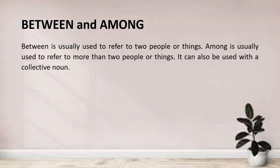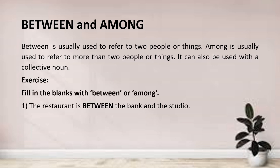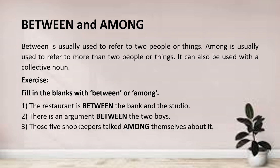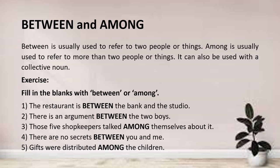Now I'll tell you about the usage of prepositions between and among. Between is usually used to refer to two people or things, while among is used when we refer to more than two people or things, and it can also be used with collective nouns. For example: The restaurant is between the bank and the studio — two nouns, so we use 'between'. There is an argument between the two people. These five shopkeepers talked among themselves. There are no secrets between you and me. Gifts were distributed among the children.